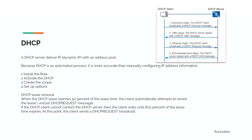DHCP is an automated process, and it is more accurate than manually configuring IPs — because you cannot go to all 25,000 computers and add them manually. To have DHCP, you must install the role, activate DHCP, create a scope, and set up the options.